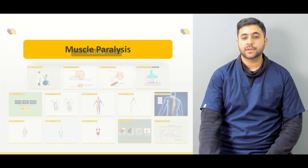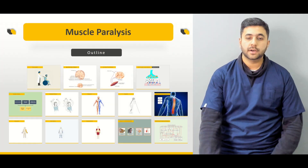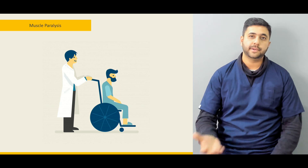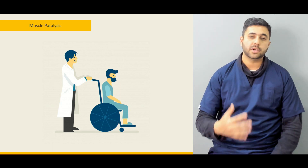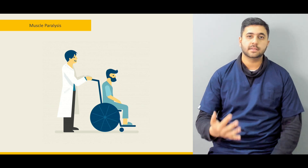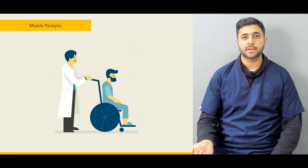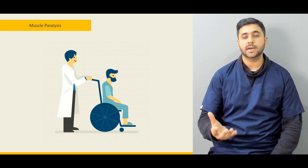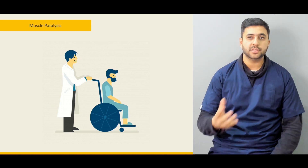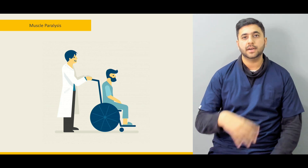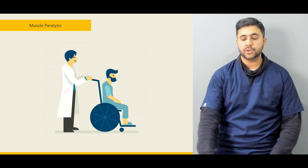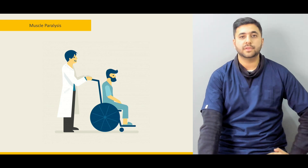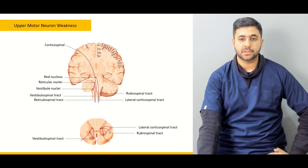We are going to start by defining certain terms: muscle paralysis — what is muscle paralysis, what does paresis mean, what is plegia, quadriplegia, paraplegia. We are going to define certain terms to make a clear demarcation of the various presentations.